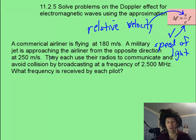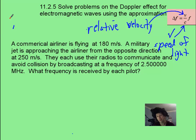Now with that in mind, pause it, see if you can solve this problem. First you want to find their speed relative to each other, which can be done by just adding the 180 plus the 250. And you're going to end up with 430 meters per second as your relative velocity. Or that's going to be your v for the equation.